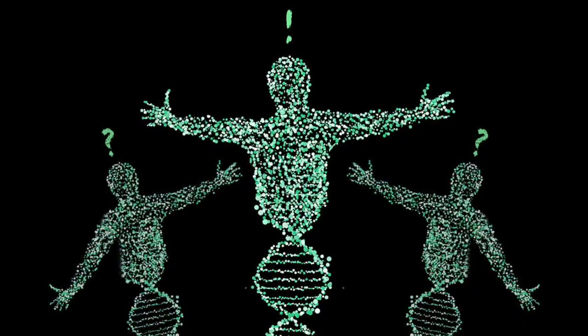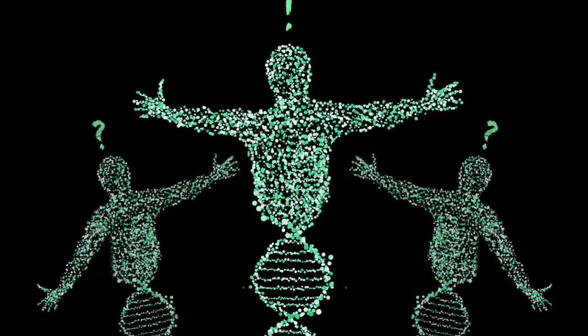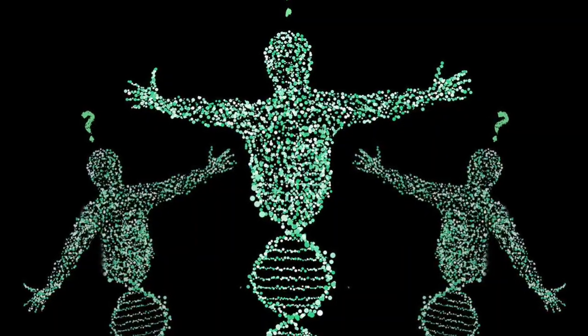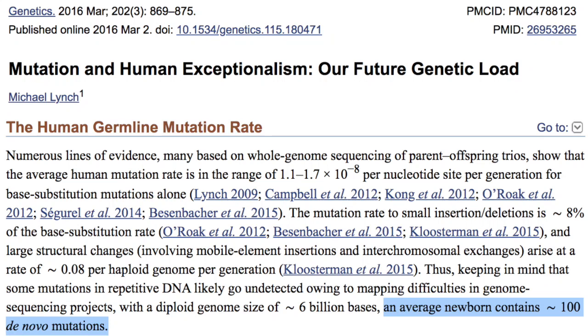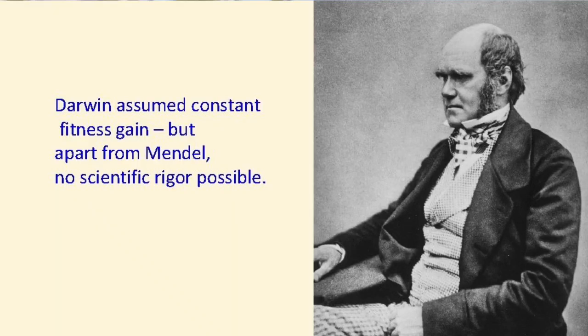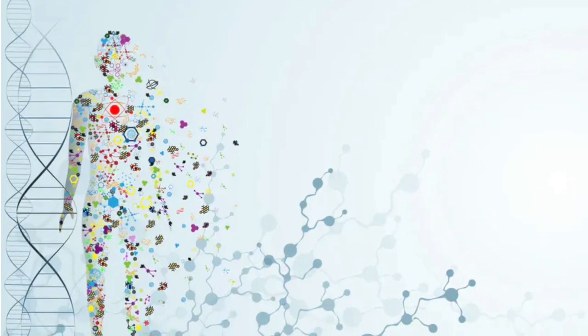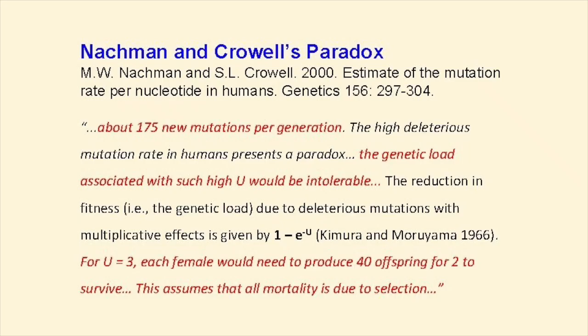Mutation accumulation means that genomes are always degenerating. The human mutation rate is roughly 100 new mutations per person per generation. Natural selection is limited — it is simply a fine-tuning mechanism that will keep a species as strong as it can be. And genetic entropy is the fact that natural selection is not powerful enough to remove most mutations.